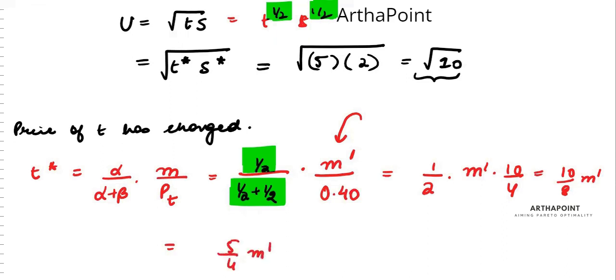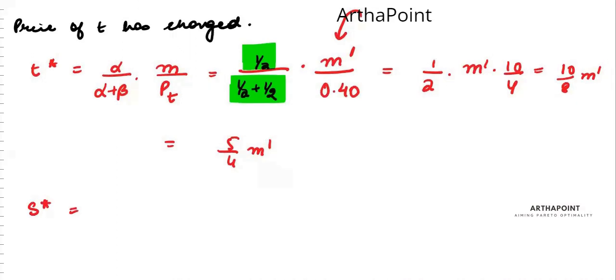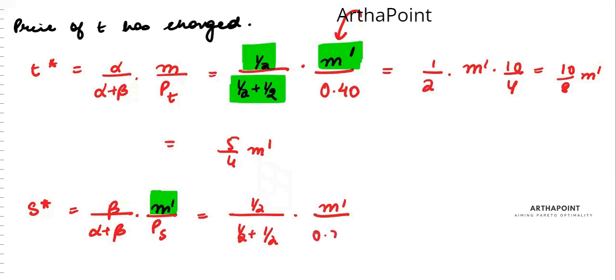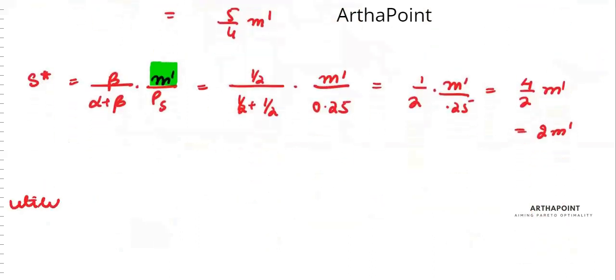What would be s star? S star should be beta upon alpha plus beta m dash by ps. Because if income is changing, income will change for both the commodities. So my beta is half, alpha upon alpha plus beta is half. I don't know what the new income should be, but the price of s has not changed so it is still $0.25. So it will be half into m dash by 0.25, so it will be 4 by 2 m dash. It will be 2 m dash.